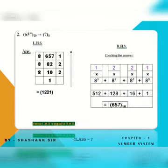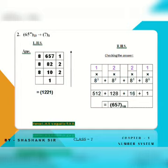Now we convert a decimal number into octal. We divide by 8, since 8 is the base of the octal number system, and we get the answer. To check the answer, we take the octal result — for example 1221 — and from the right side we raise 8 to the powers 0, 1, 2, 3. Remember: 8 to the power 0 equals 1. So 1 times 1 is 1, 8 times 1 is 8, 8 squared times 2 is 128, and so on.